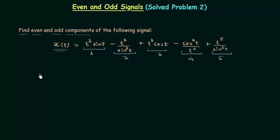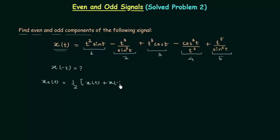There are two ways to find even and odd components. The first is to perform time reversal and find x(-t). Once you have x(-t), you can use the formula for the even component: x_e(t) = (1/2)[x(t) + x(-t)], and the odd component: x_o(t) = (1/2)[x(t) - x(-t)].